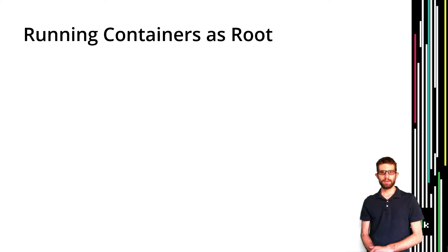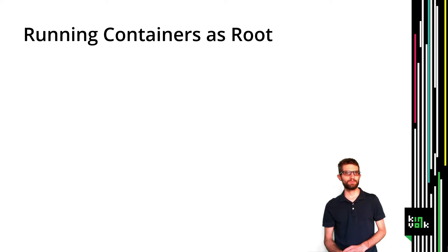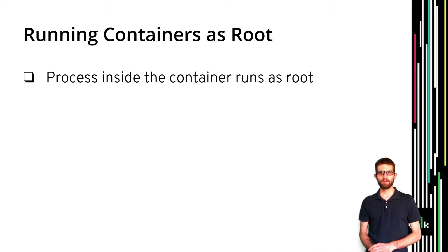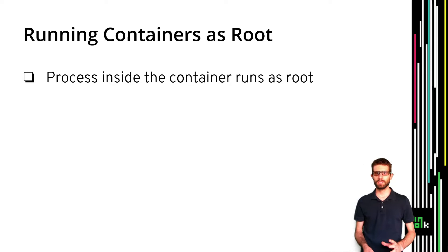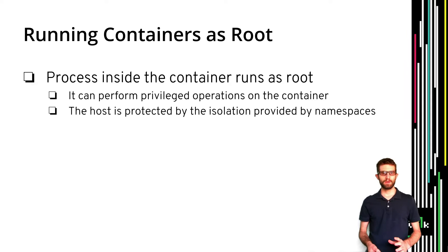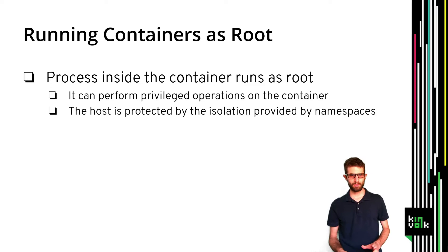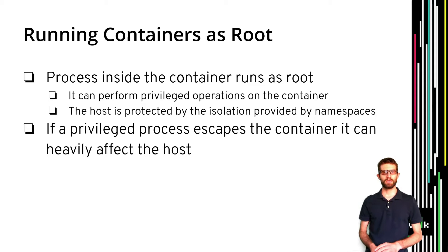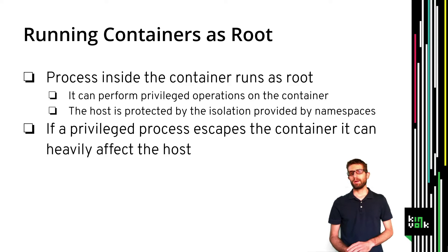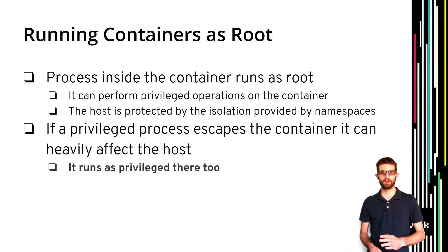The main motivation for implementing user namespaces in Kubernetes is that running containers as root is very dangerous. When we say a container is running as root, it means a process inside the container is running as root. This process is able to perform privileged operations on the container, and the host is usually protected by the isolation that Linux namespaces provide. Unfortunately this isolation is not perfect, and in some cases such a process could escape the container. If a privileged process escapes the container, it will be running as root on the host and will be able to do a lot of damage.